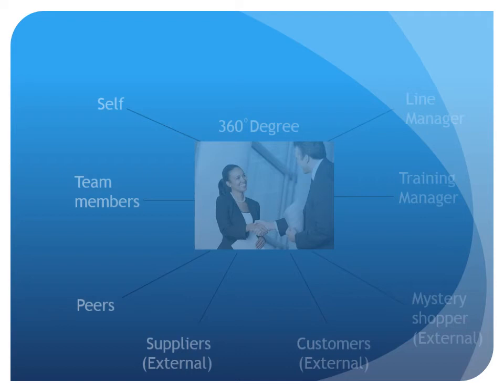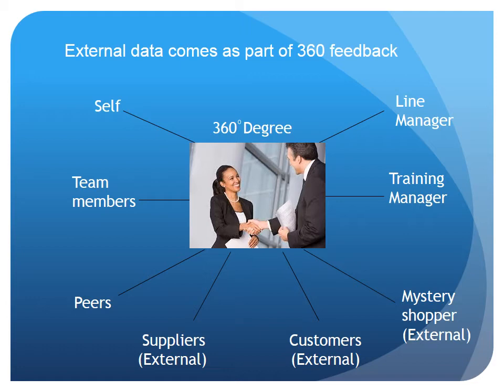External data could come as part of 360-degree feedback. 360-degree feedback involves stakeholders who provide feedback on an individual's performance. In many organisations, the information is gathered using formally constructed questionnaires sent out to chosen stakeholders, which is then collated and fed back to the individual. Stakeholders could include people internal to the organisation, but also external partners — this is where the external data comes from. Examples include suppliers who may feedback on the relationship they have with the individual, and customers who may provide feedback in the form of complaint or compliment letters, or through mystery shoppers.